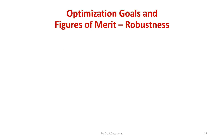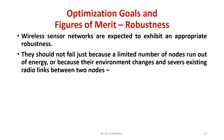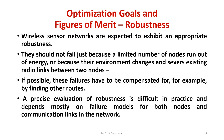Now we are going to discuss the fourth goal: robustness. Wireless sensor networks are expected to exhibit appropriate robustness. They should not fail just because a limited number of nodes run out of energy or because environmental changes sever existing radio links between two nodes. If possible, these failures have to be compensated for — for example, by finding other routes. Evaluation of robustness is difficult in practice and it depends mostly on failure models for both nodes and communication links in the network.